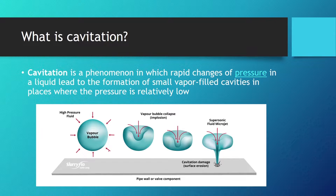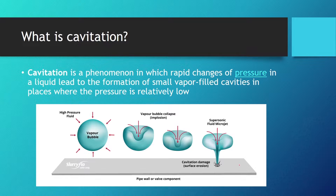High vacuum creates vapor bubbles within the oil which are carried to the discharge pressure side of the pump, and these bubbles collapse in this fashion and create a supersonic fluid microjet that damages the inner components of our pump.